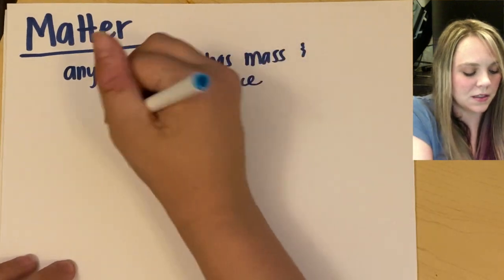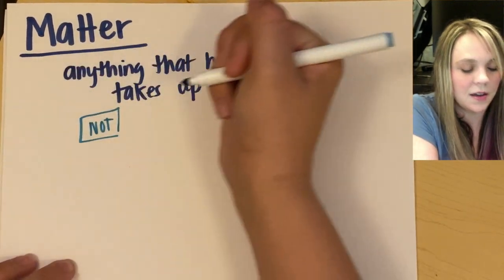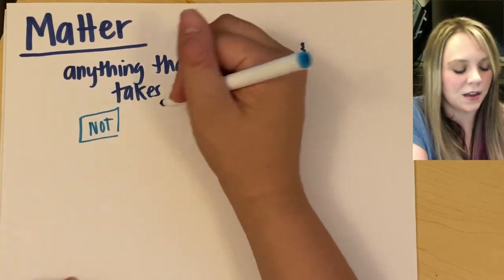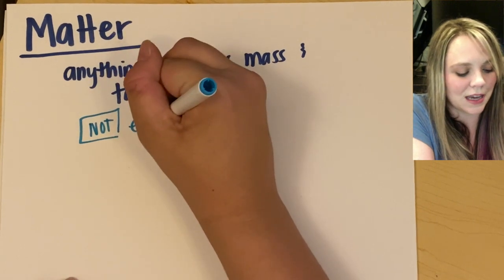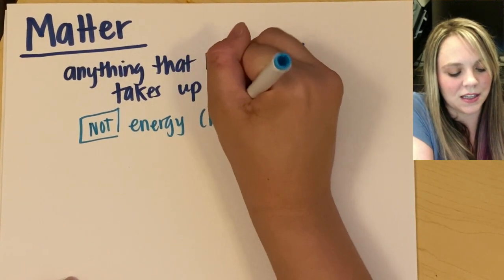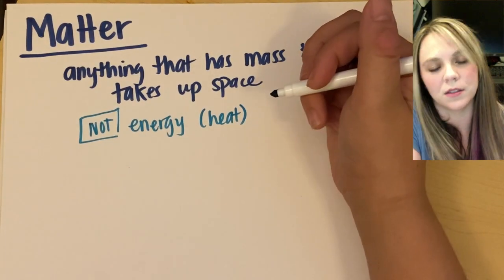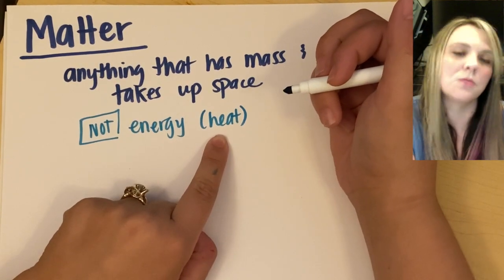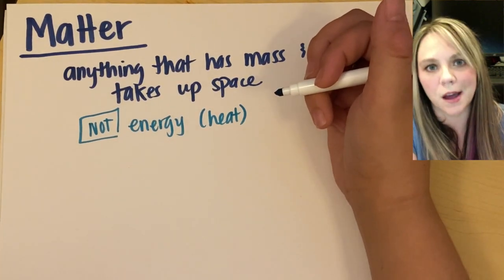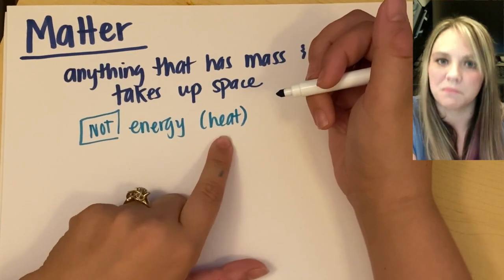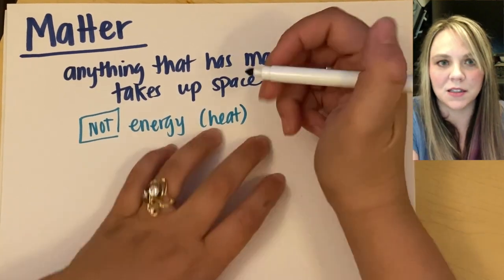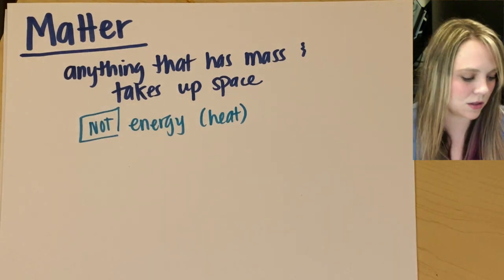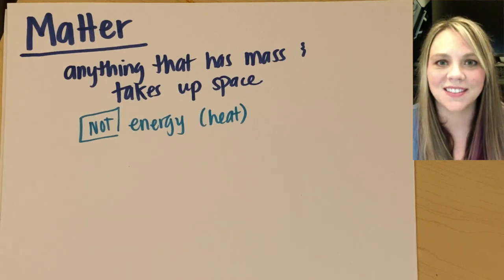Common things that are not matter but always end up as like a trick question or someone accidentally clicks this as matter would be things like energy. So you're talking like heat, light, although that gets into photons, we can talk about that later. Questions like which of the following is matter, which of the following is not matter? Highly missed question, because heat is not, it's not a thing. There's no actual object. It doesn't have mass. It has energy. So steer clear of that common mistake.